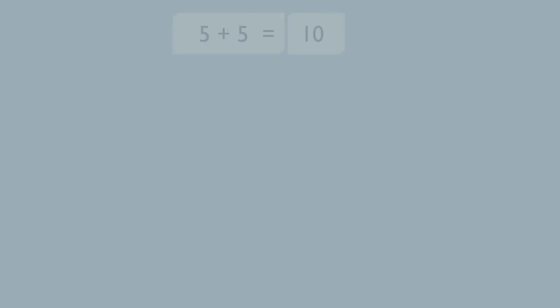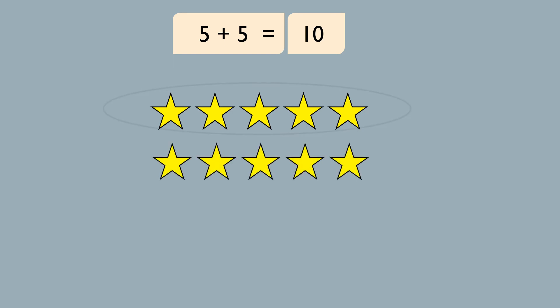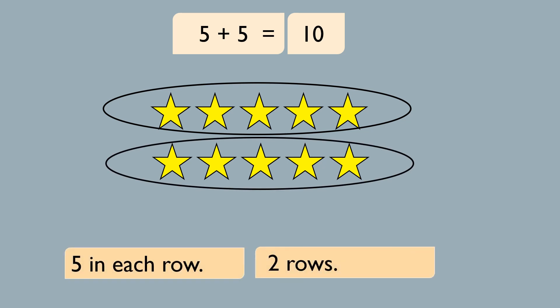Let's make an array for this number sentence: 5 plus 5 equals 10. So I am going to draw a row of 5 stars. I need to make one more row because I have one more 5. We have 5 stars in each row and we have 2 rows, which means that we will be adding the number 5 two times. And when we add the number 5 two times, we get 10. 5 plus 5 equals 10.